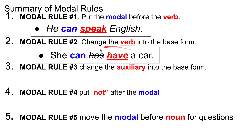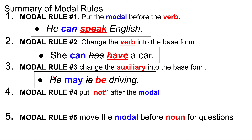Likewise, we change the auxiliary into the base form. For example, we might originally write 'he is driving.' We use 'is' because it's third person singular. But when I add a modal such as 'may,' I have to change 'is' into the base form of the auxiliary — 'be.' So: 'he may be driving.'